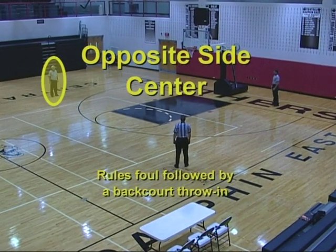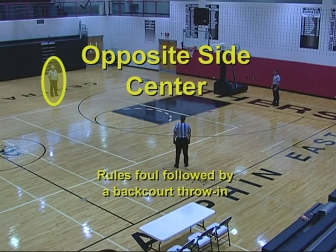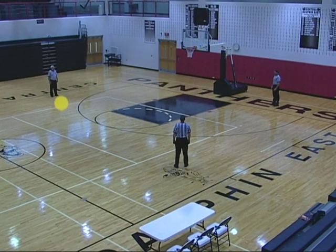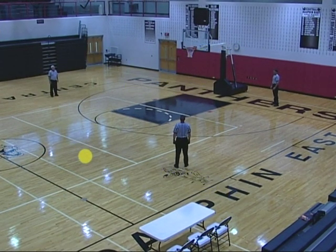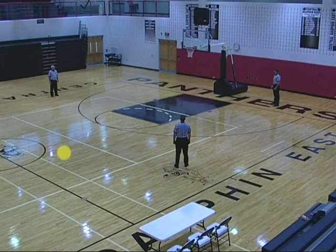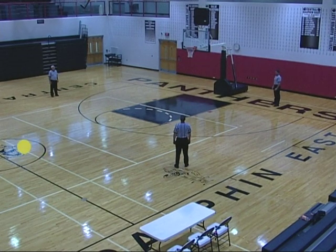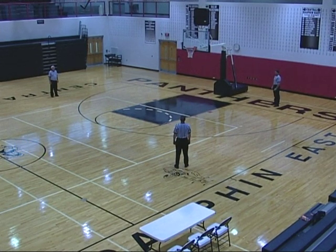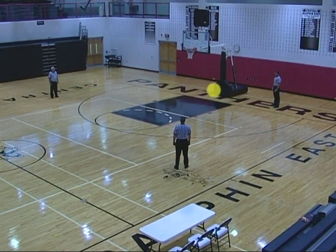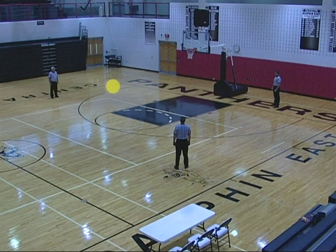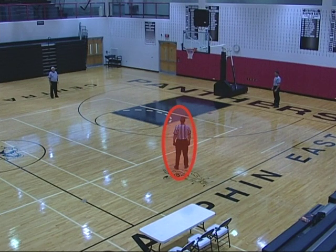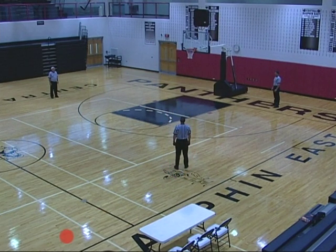Opposite side center rules foul, followed by a backcourt throw-in. Proceeds to the reporting area, reports the foul, and becomes the opposite side lead. Table side lead becomes opposite side trail and handles the throw-in in the backcourt. Table side trail becomes table side center.